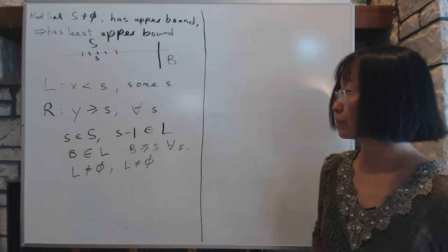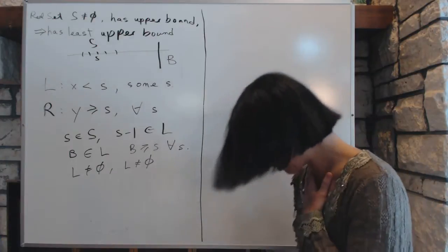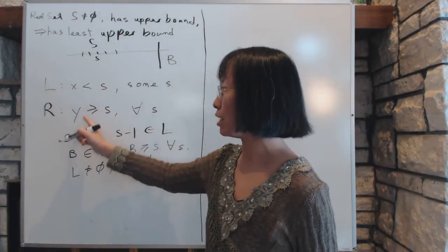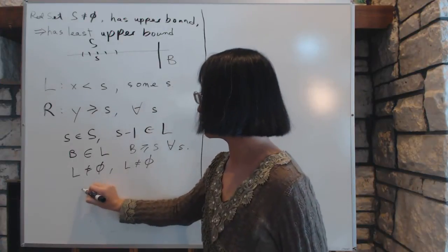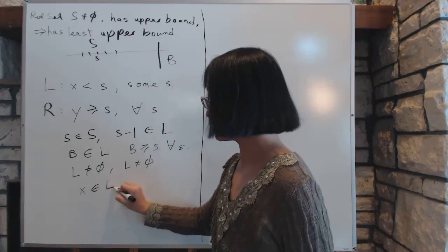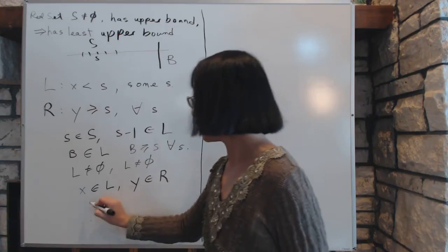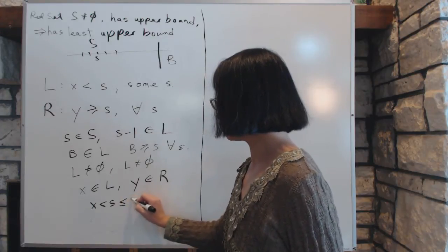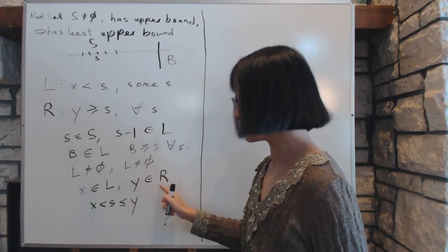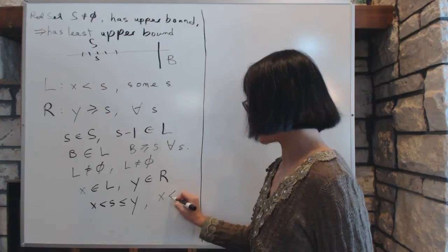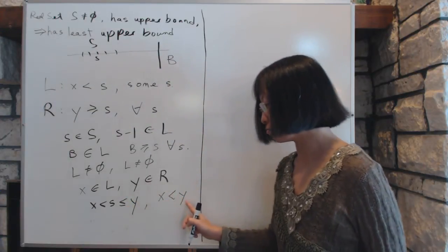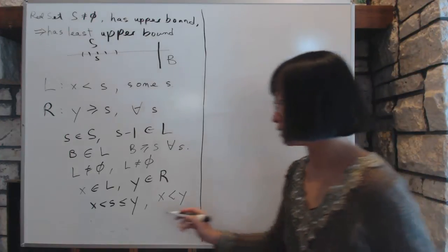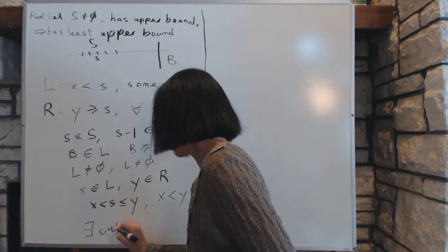The third condition of the axiom of continuity is that you have to show that every element in L has to be less than every element in R. So if you pick an x in L and a y in R, then x is going to be less than s for some s by definition, which is going to be less than or equal to y, because y is bigger than every s out there if it's in R. That satisfies the condition that x is less than y for any x in L and y in R. Therefore, the third condition of the axiom of continuity is met, and by the axiom there exists a cut number c.